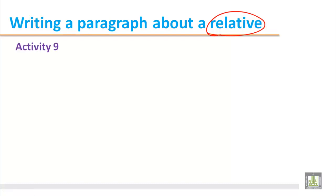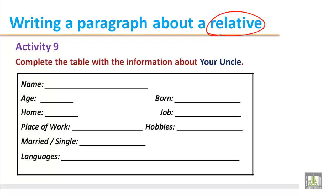Activity 9. In this activity we are going to complete a table writing the information about your uncle, and then we will write a complete paragraph depending on the information in Activity 9. First we have to write the information about the name. This is a model paragraph and we are going to write the information as an example.